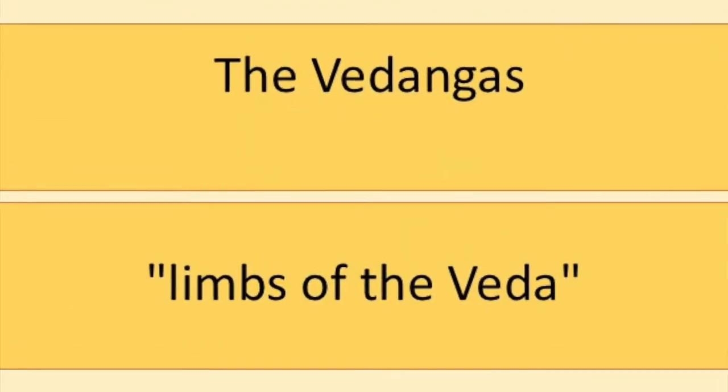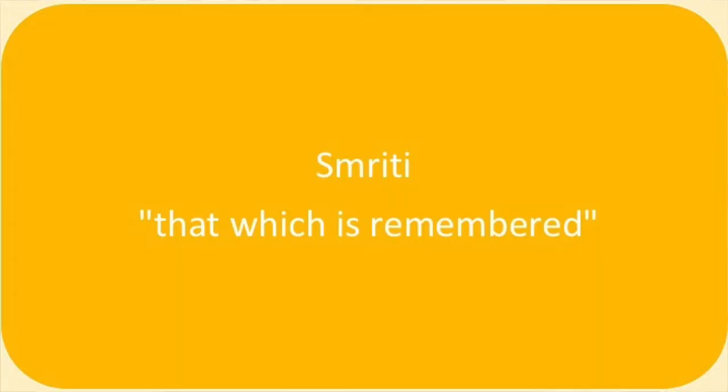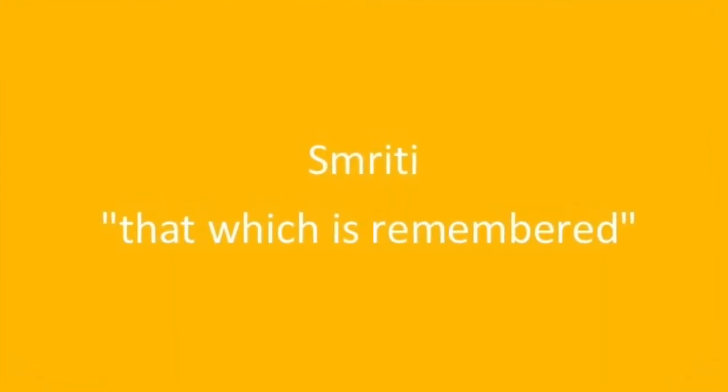Namaste. The Vedanga limbs of the Veda are six auxiliary disciplines of Hinduism that developed in ancient times and have been connected with the study of the Vedas. Vedas, as I have told you in earlier videos, are known as Shruti whereas Vedangas are a part of Smriti. Smriti means that which is remembered. These are usually attributed to an author and traditionally written down.